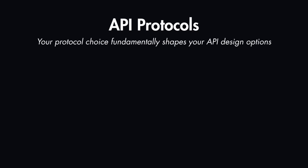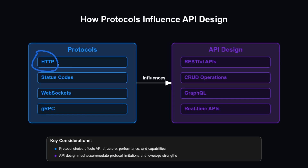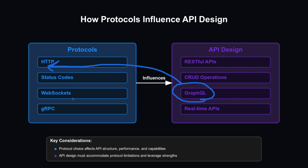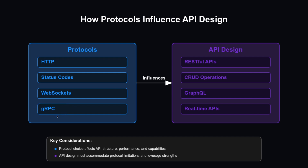Each API style uses different protocols, and your protocol choice fundamentally shapes your API design options. HTTP directly enables RESTful capabilities and provides status codes well-suited to CRUD operations. WebSockets enable real-time data, making them ideal for chat applications or video streaming. gRPC can be used among microservices to achieve better performance compared to HTTP.